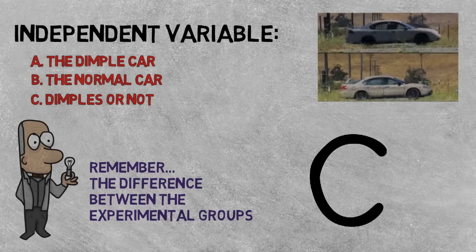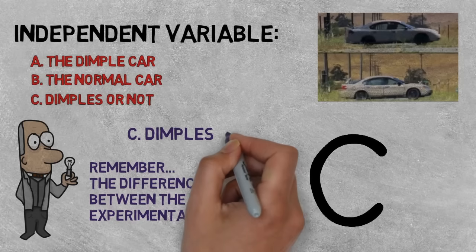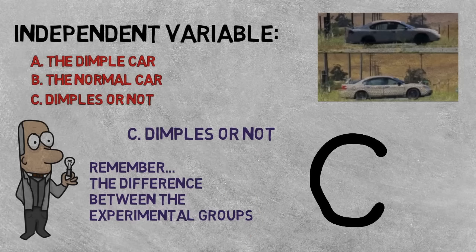The correct answer is C, whether the car had dimples or not, because that's the difference between the two groups in their experiment.